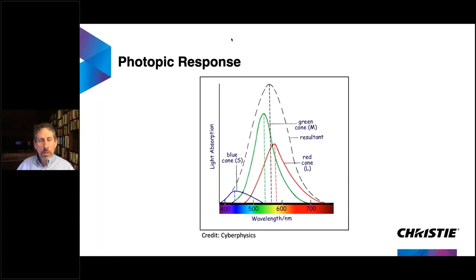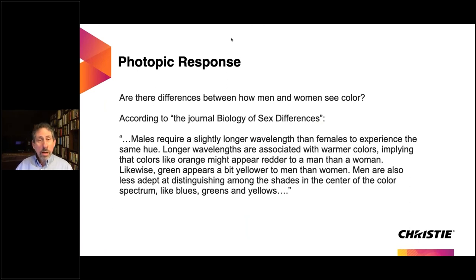I want to talk about the photopic response. The cones in the eye see color; rods see brightness. There's a red cone, a green cone, and a blue cone — but the red cone actually intersects red, green, and blue; the green cone intersects all three as well; blue only reaches into the blue and green zones. It's not a hard fixed point. Men and women also see color slightly differently, due to physiological differences, which is why people sometimes disagree on what color something is.